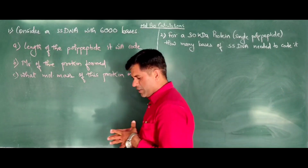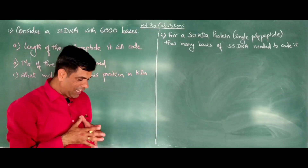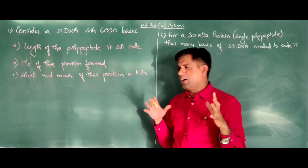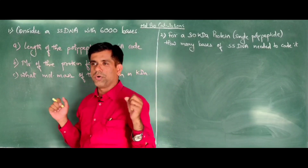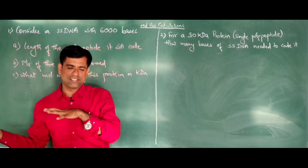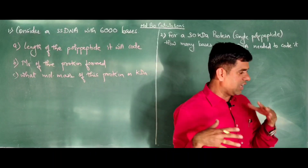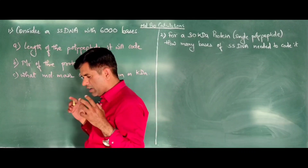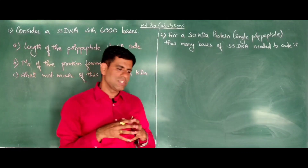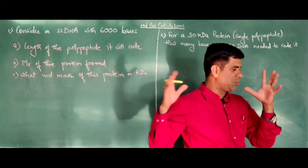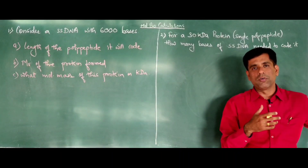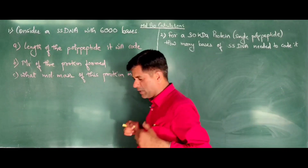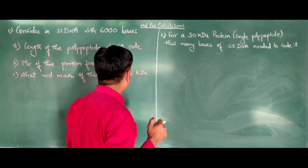Hi friends, you're back with me, Professor Girish Kukreja. Today we'll be talking about some calculations related to molecular biology, like the central dogma where DNA gets transcribed into RNA and RNA gets translated into proteins. Many times in examinations we face questions like: given a molecular weight, what would be the number of bases in the DNA, and vice versa. So without wasting much time, let's go ahead.